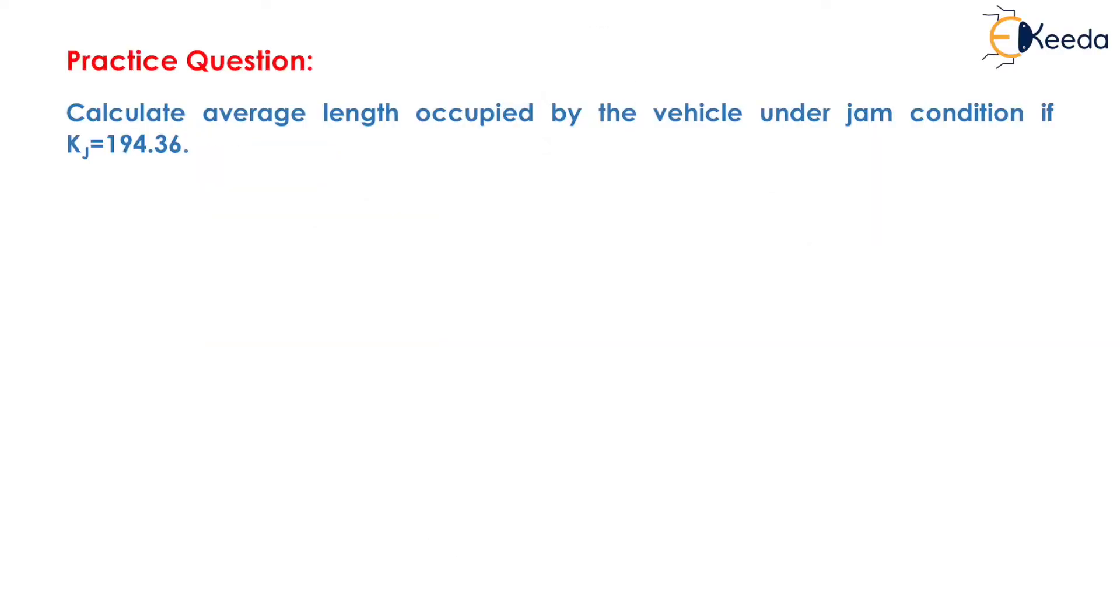Question is given as: calculate average length occupied by the vehicle under jam condition if jam density is given as 194.36. Now we know